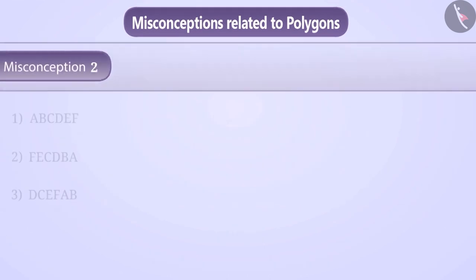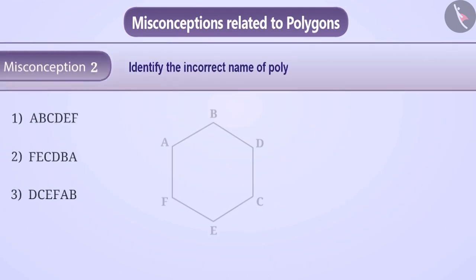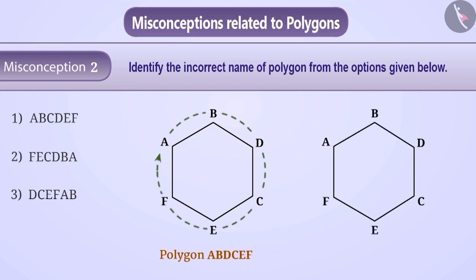Misconception 2. Identify the incorrect name of polygon from the options given below. Some students have a misconception that the name of the polygon can be identified by writing the letters of the vertices in any order. In the given figure, vertices are named from A to F. Students ignore the sequence in vertices and name the polygon as ABCDEF, which is a wrong name. Therefore, option 1 is the correct answer to the given question.